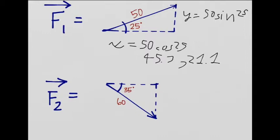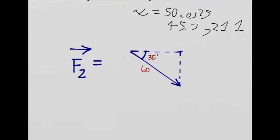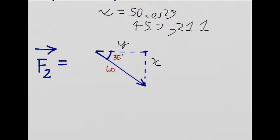Now let's go to F2. This again will be the Y, which is sine, and the X will be cosine. So I'm just going to skip that part. X is 60 cosine 35.